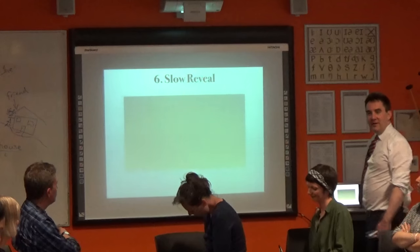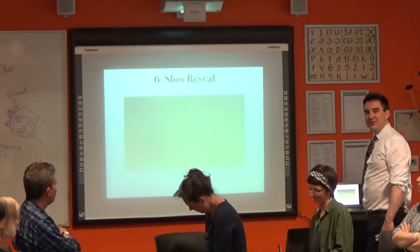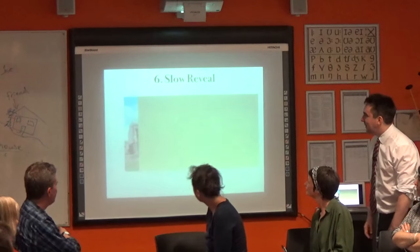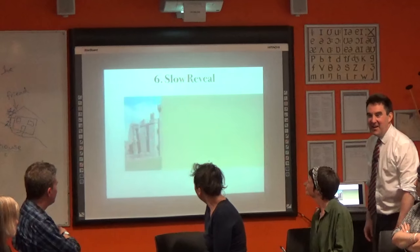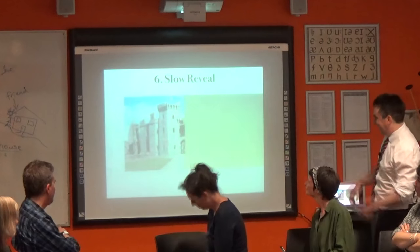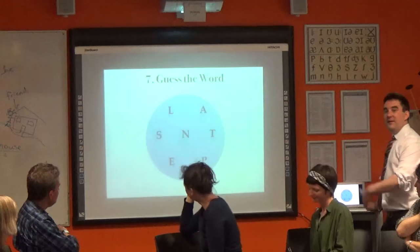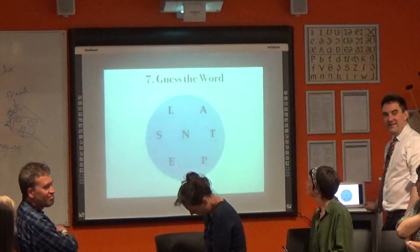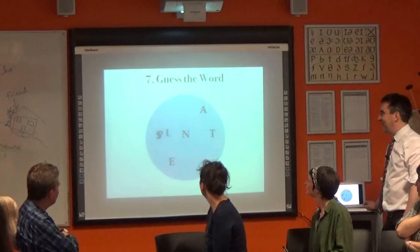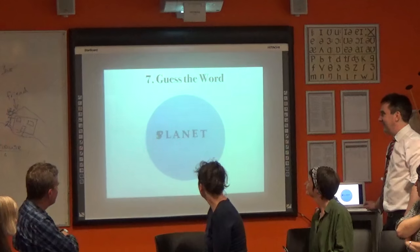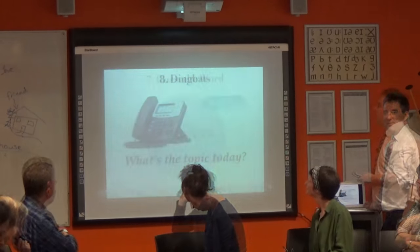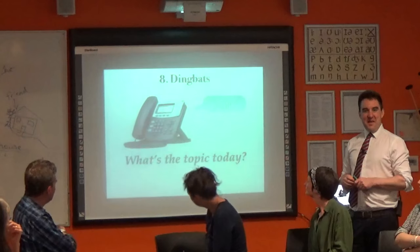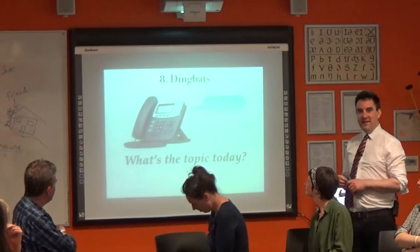Number six: slow reveal — I've got a picture, shout out the first one who thinks they know what it is. Castle — got there eventually. Guess the word. Dingbats — what's the topic today? Science and technology — we've got a phone, an equation. Smartphones.